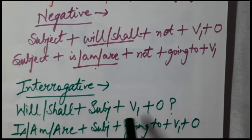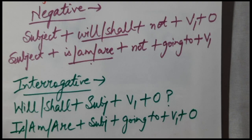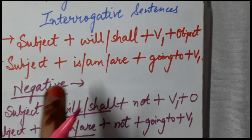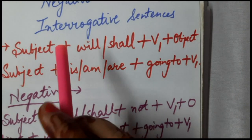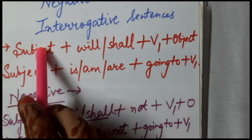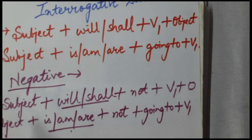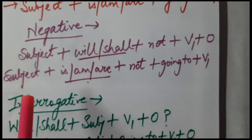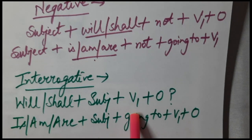For example: 'Will he wait for you?' or 'Is he going to wait for you?' Now we will practice all these — negative, affirmative, and interrogative — using different verbs. Let us take the verb eat. 'I will eat.' 'I am going to eat.' Now negative: 'I will not eat.' 'I am not going to eat.' And interrogative: 'Will I eat?' 'Am I going to eat?'